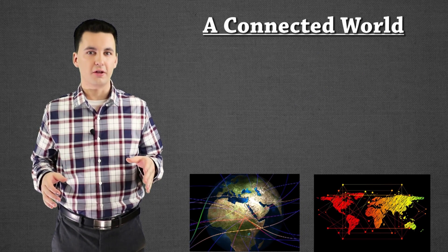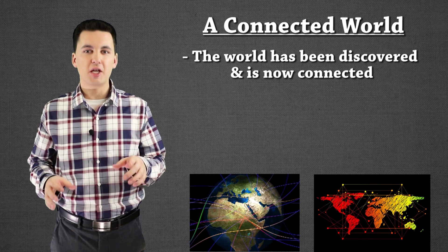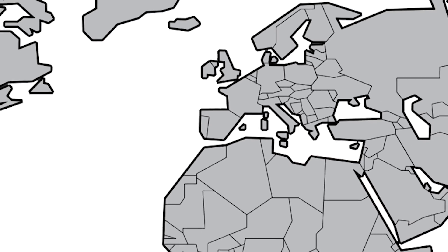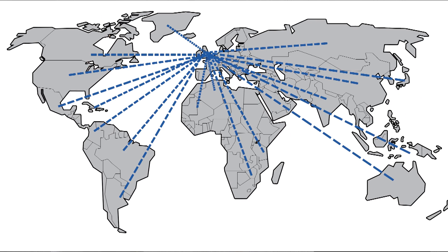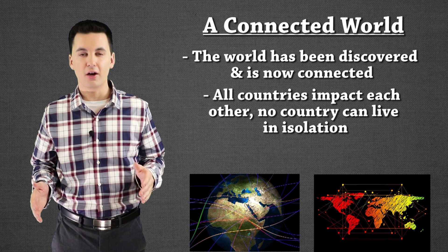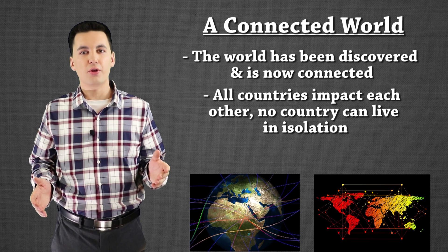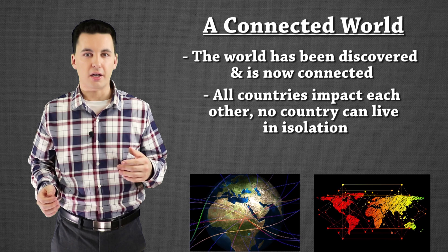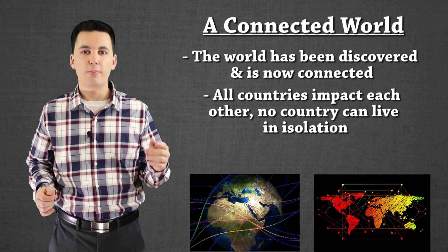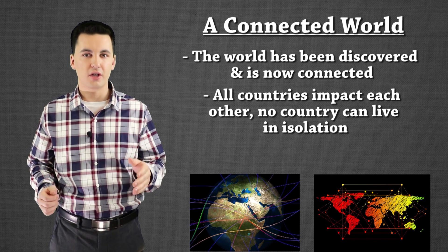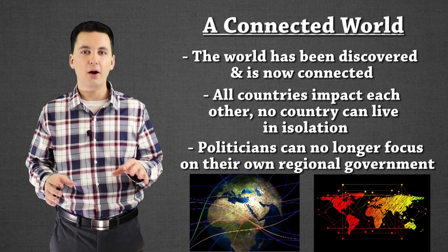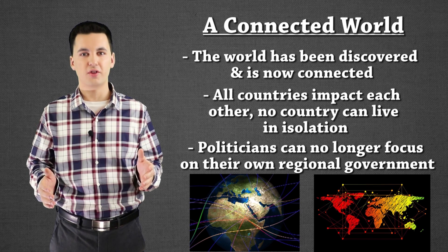Another thing Mackinder noticed is that due to colonialism and imperialism, the world was kind of discovered, and with this came a new connected world. He noticed that what happened in the UK impacted all their different colonies and other parts of the world — there was now a relationship between countries and different regions. At the same time, what happened in India also impacted the UK. It went both ways. Before, people thought it was more of a one-way street. Mackinder noticed it went back and forth, and this created a new different type of governing where politicians had to be aware of events around the world and how that might impact their country.